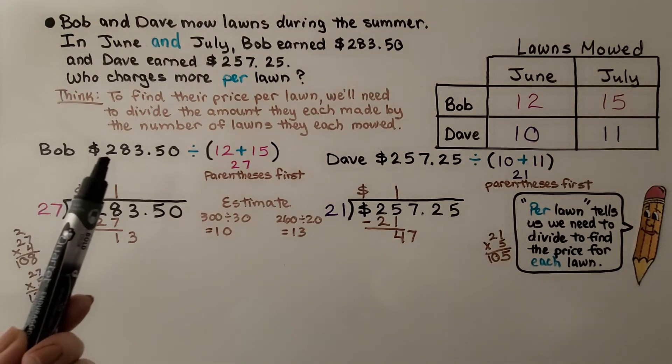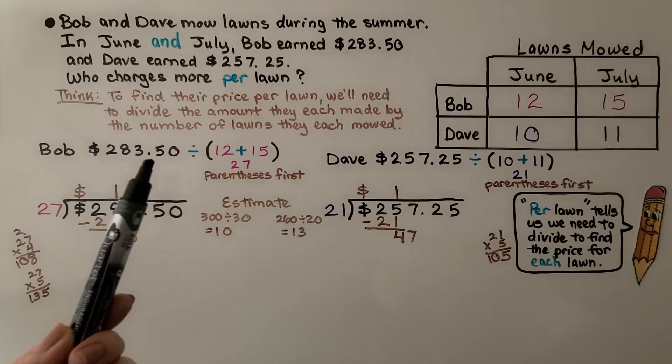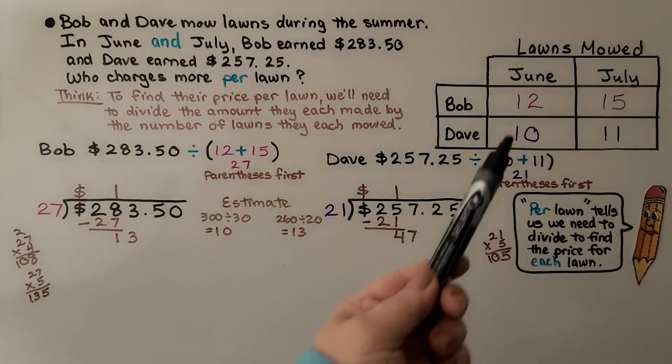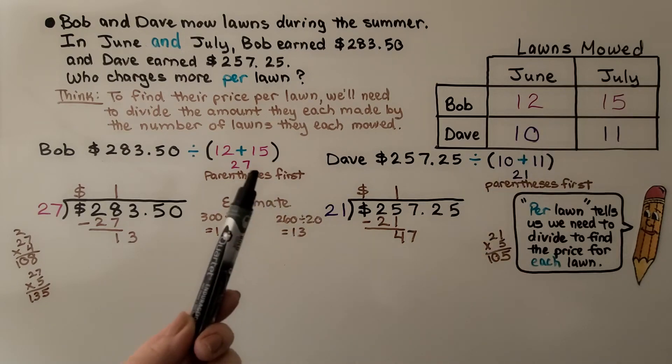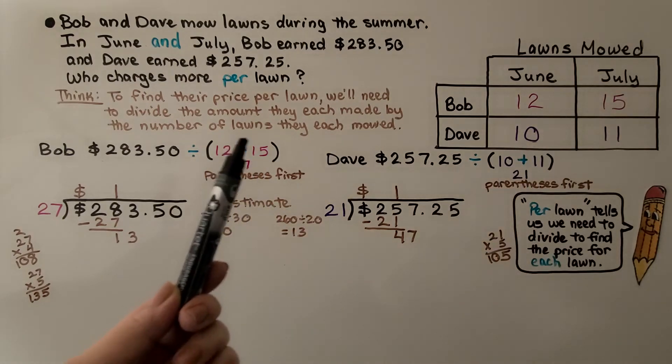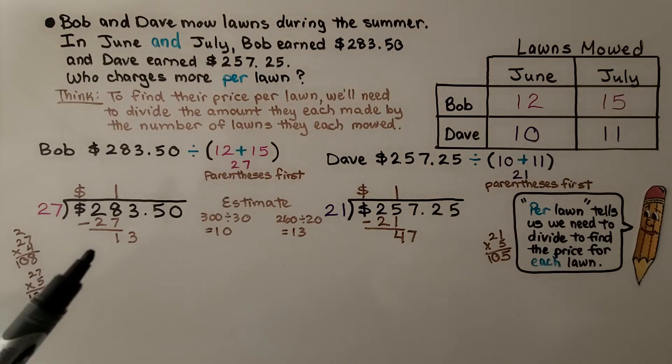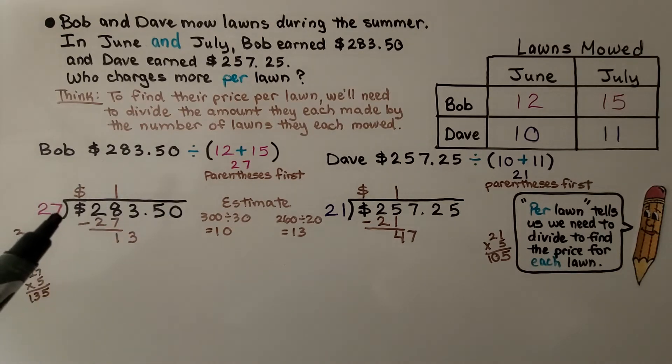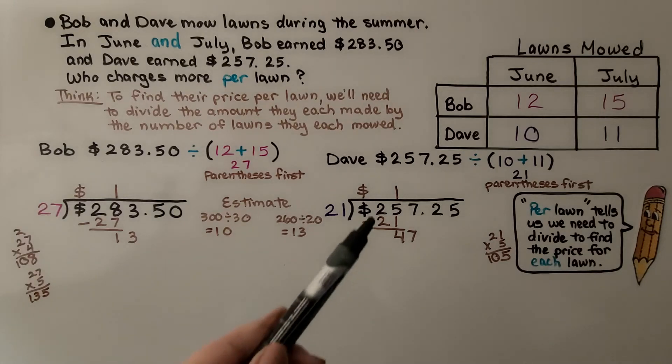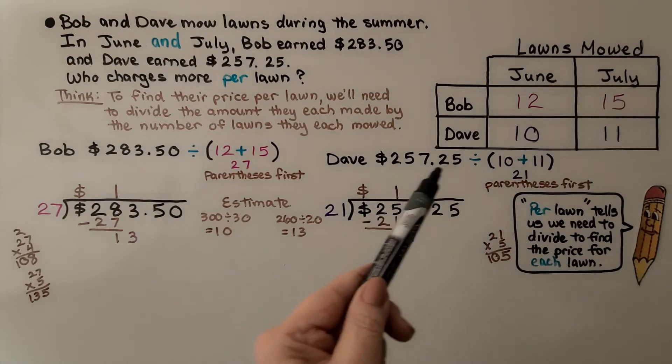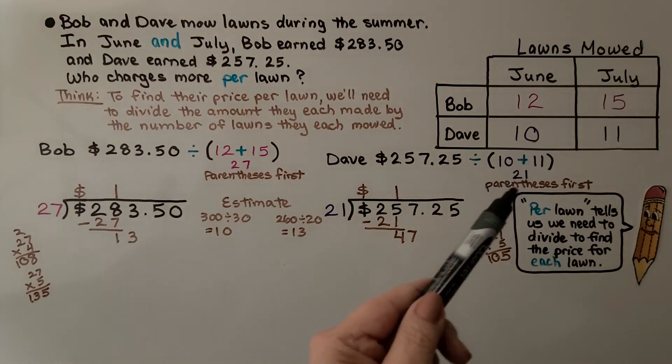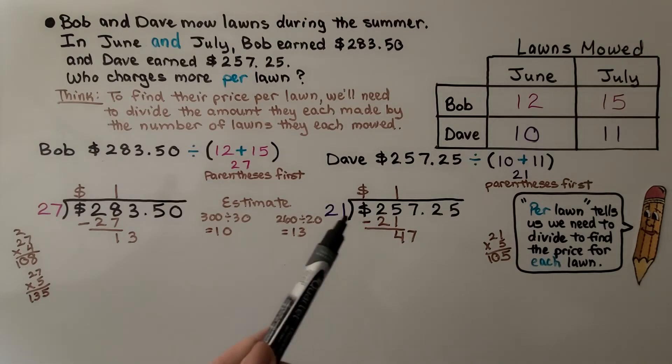So for Bob, we have $283.50 divided by the 12 plus 15, which is 27. And we're going to do within the parentheses first. That means we have a lawn division problem of $283.50 divided by 27 lawns. And for Dave, we're going to divide his total amount by the number of lawns he did, 10 and 11, that's 21. So we're going to divide his amount by 21.